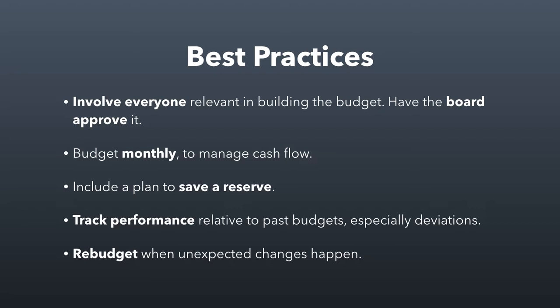Make sure your budget includes a plan to save a reserve. You don't want to be excessive, but in general you should set money aside for unexpected expenditures. Track performance relative to past budgets, especially deviations, so you can know how you're doing. And especially relevant these days — make sure you re-budget when unexpected changes happen. You may need a mid-year re-budget because of expenditures or revenue losses not in your original plan. The best budgets are ones people pay attention to regularly, not something done once a year and ignored.